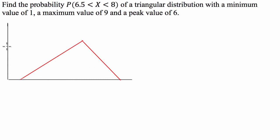So what I've done is I've quickly drawn up a triangular distribution type function and we're going to sub in the values that we know. So it has a minimum value of 1, a maximum value of 9, and a peak value of 6. So this here is 6. Perfect.